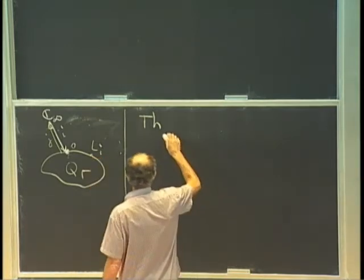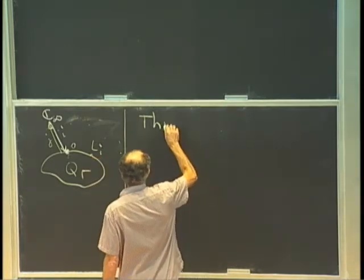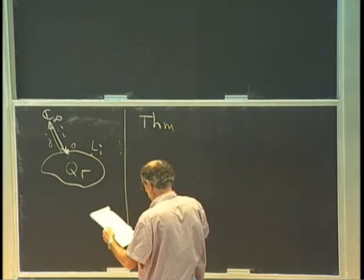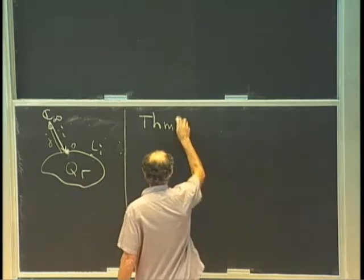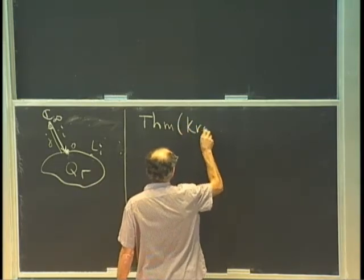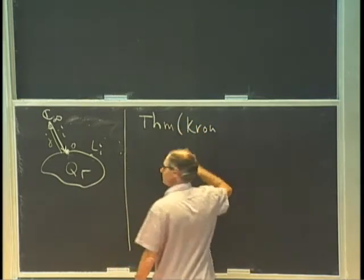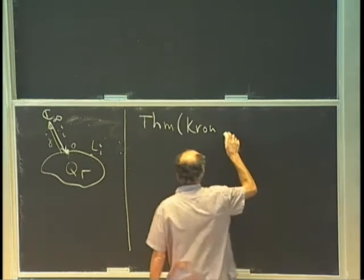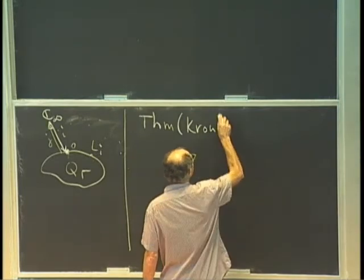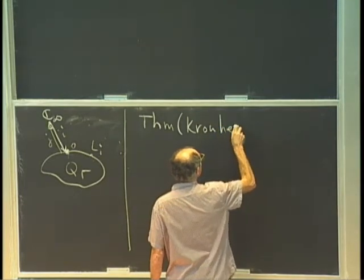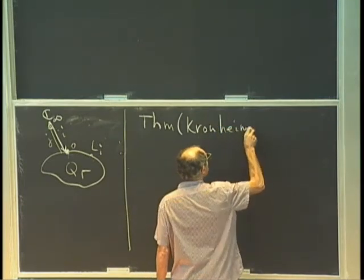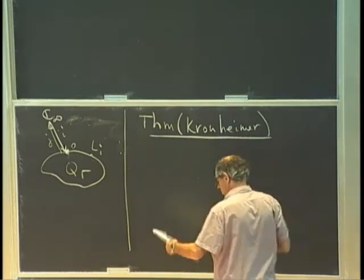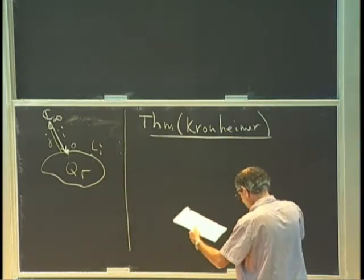A basic result which leads to Nakajima varieties is a result by Kronheimer — I think this was actually his PhD thesis.